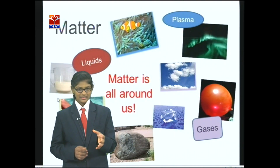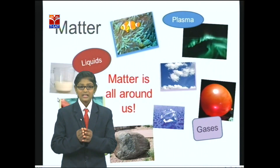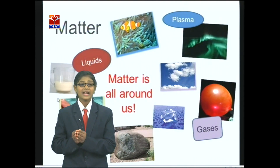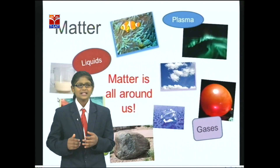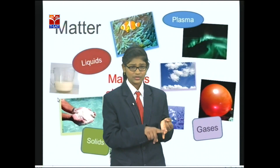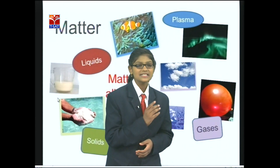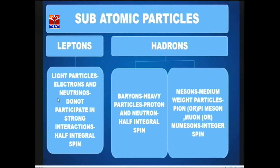Matter consists of atoms. The smallest particle in matter is the atom. We know that atoms have many types of subatomic particles. Subatomic particles include protons, electrons, neutrons, and so on, but we consider these three as main. Today we will learn about some other subatomic particles.